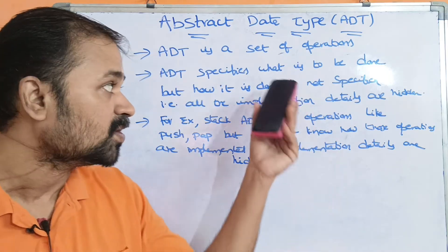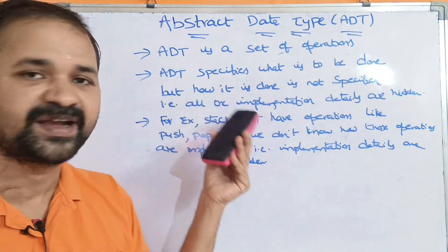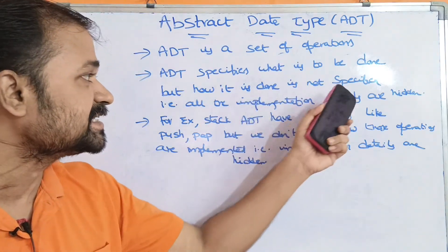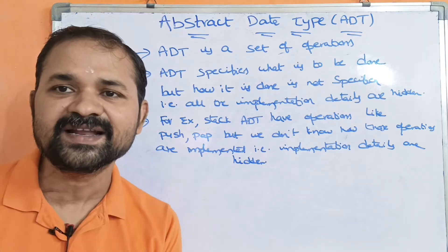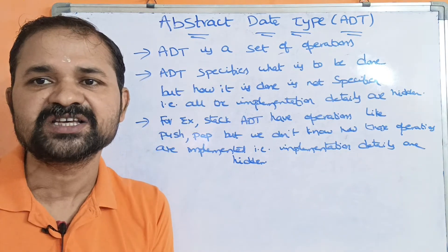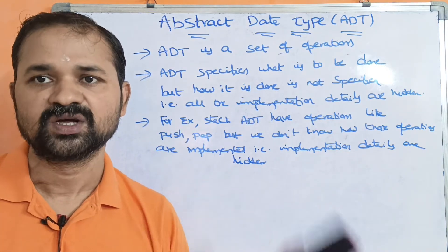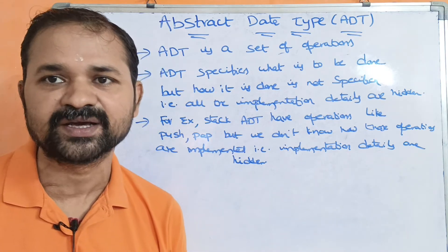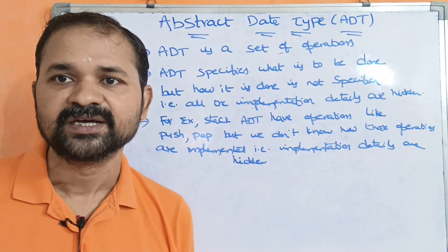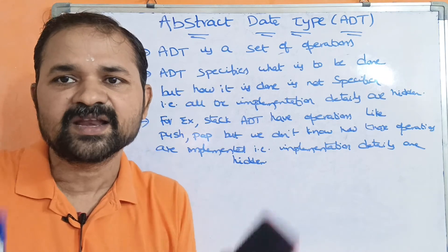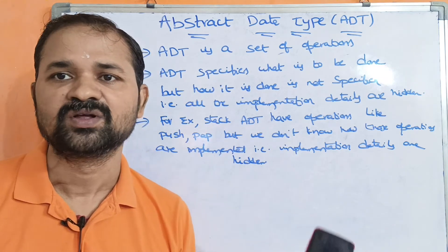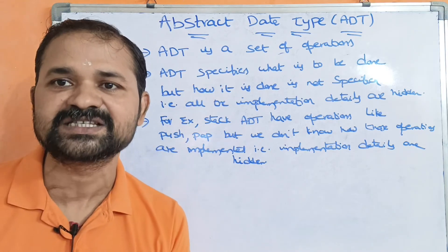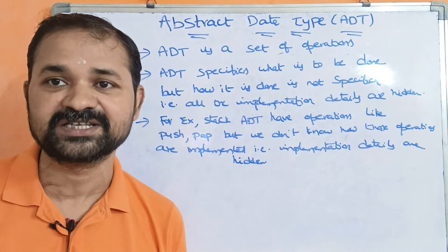So what is to be done is specified, and those operations are specified. But how it is done is not specified — the internal details are not provided to us. For example, suppose we use a website, a WhatsApp app, or a YouTube app. We can use YouTube and WhatsApp, but internally how YouTube and WhatsApp were designed — we don't know.